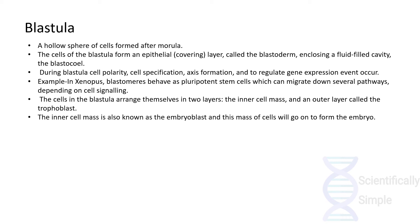The cells of the blastula form an epithelial layer called the blastoderm, filled with a cavity known as the blastocoel. During blastula formation, cell polarity, cell specification, and axis formation help regulate gene expression over their lifetime. For example, in Xenopus, blastomeres behave as pluripotent stem cells that can migrate down several developmental paths depending on cell signaling. The cells arrange themselves in two layers: the inner cell mass (embryoblast), which will form the embryo, and the outer trophoblast layer.